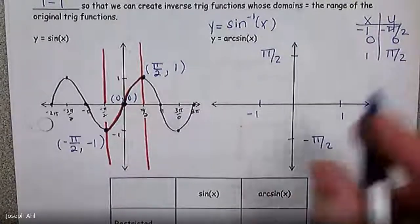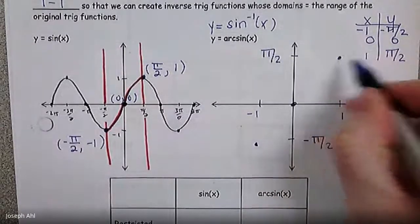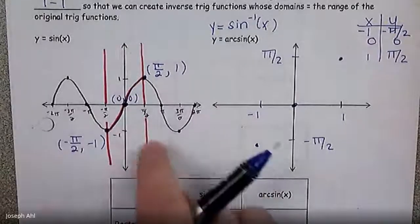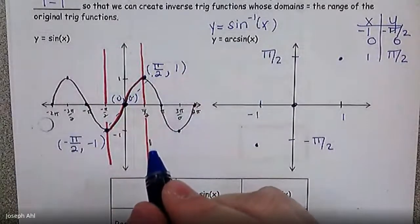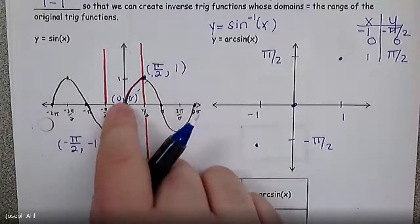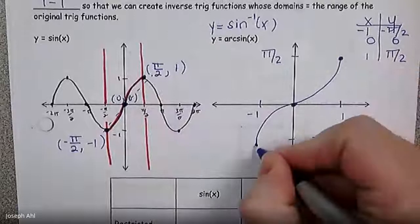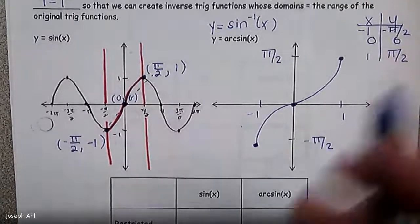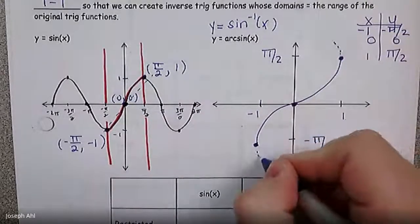Plotting these three points: (−1, −π/2), (0, 0), and (1, π/2) — these do not connect in a straight line. Think about flipping the original sine curve over the line y = x. It's going to bend one way and then curve up, like this. That is the graph of sine inverse of x, or arcsine of x. It has those specific endpoints. If you go to your calculator and type in sine inverse in Y1, it will only show you that part of the graph.